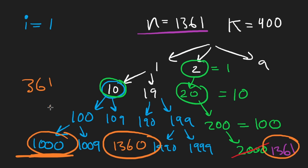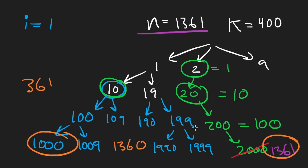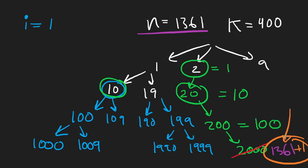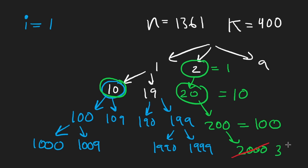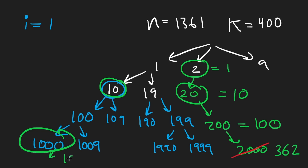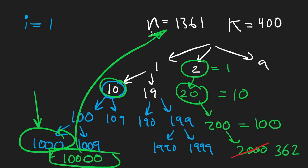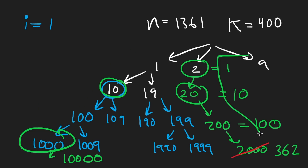So we put 1361 here. Let's do the calculation: on this level, how many can we include? Remember, this value is inclusive. We do 1361 minus 1000, which gives us 361. But since n is inclusive, we actually do n plus 1 minus current — so that's 362. And now we're done, because multiplying by 10 gives us 10,000, which is greater than n. So we stop. In this subtree we counted: 1 plus 10 plus 100 plus 362, which is greater than k.